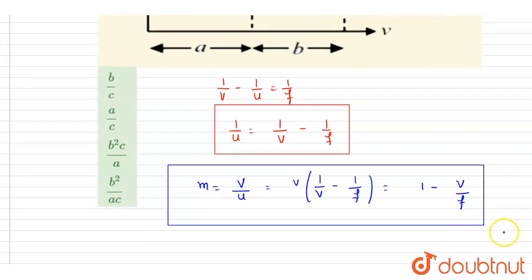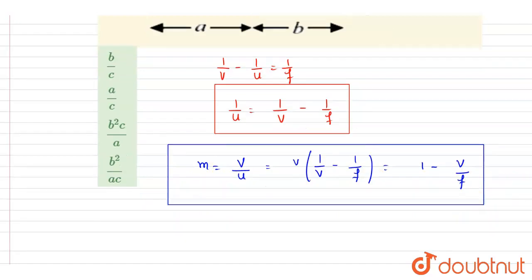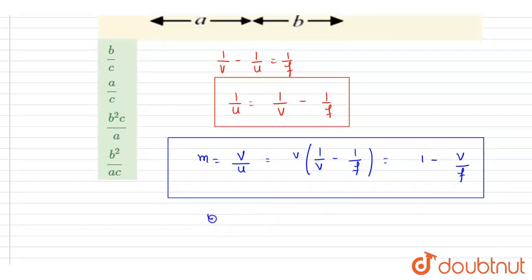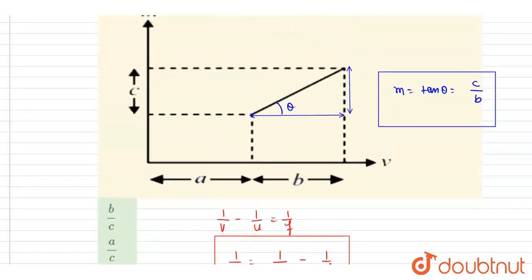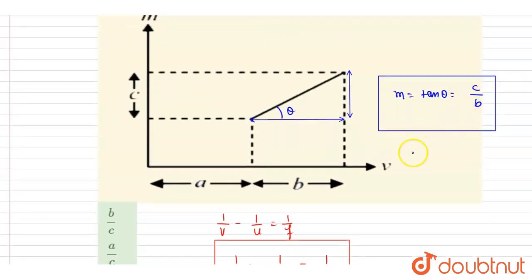And if you see this equation, you can see very clearly that if you compare this equation with y = mx + c, you can see here the slope is 1/f. The slope is 1/f, right? So 1/f is the slope, and 1/f is c/b here.